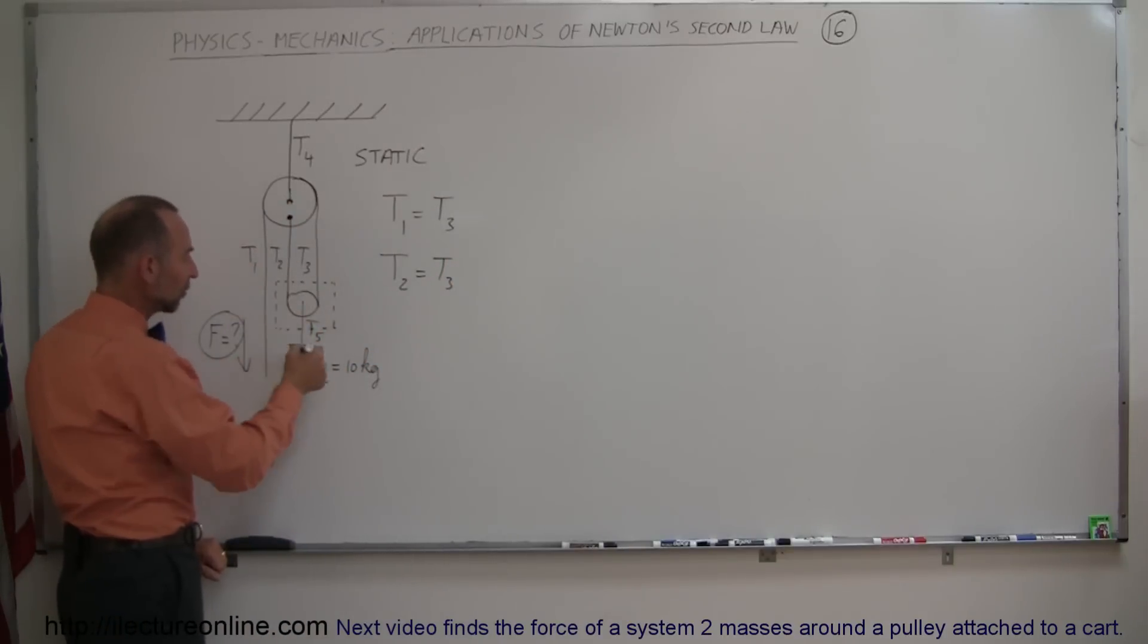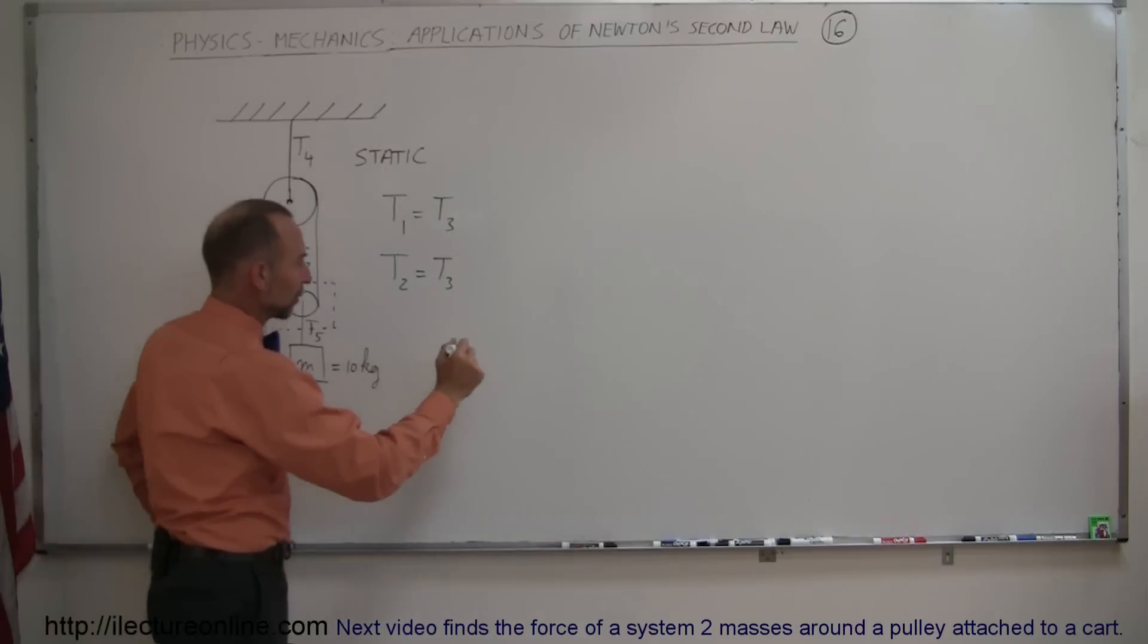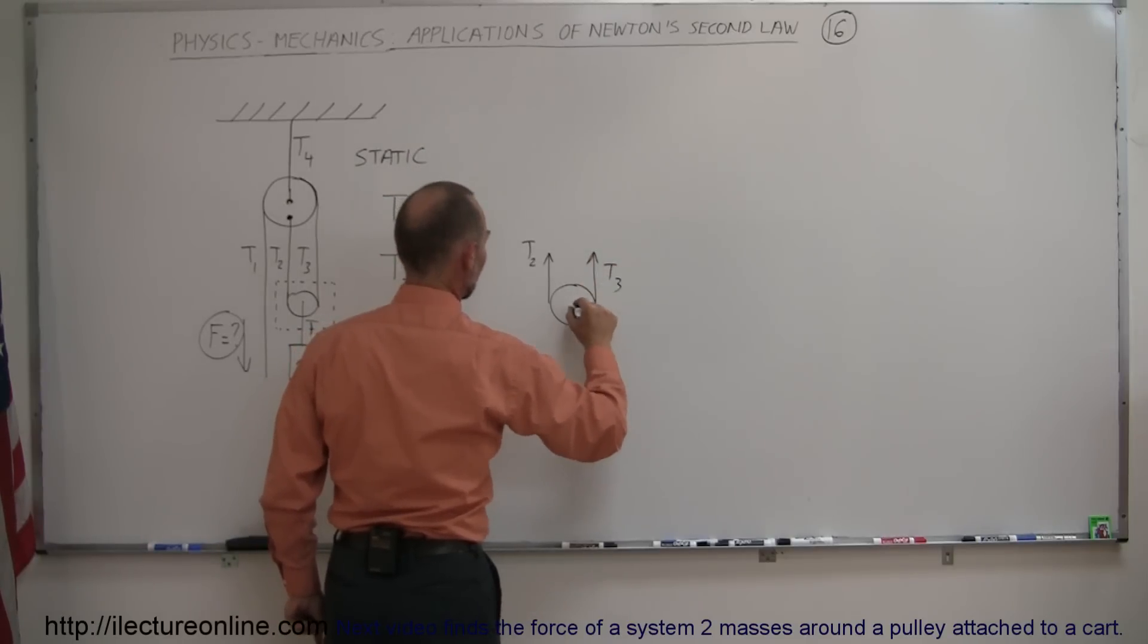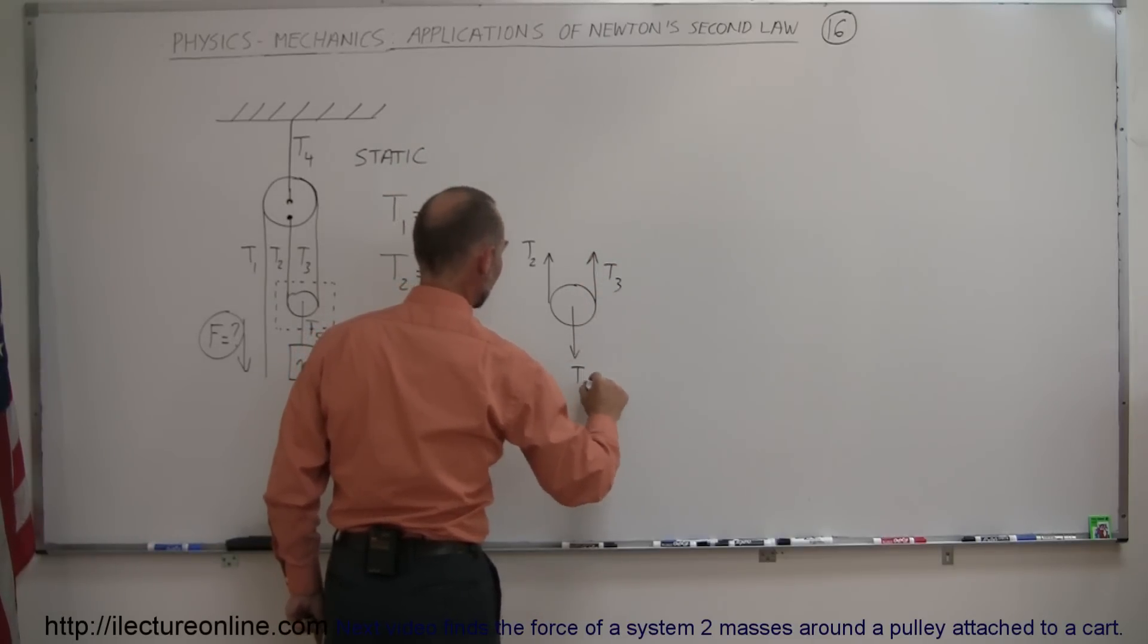And finally when we look at these three tensions, notice that if we draw a free body diagram, let me put it over here. So here's that bottom pulley. Here we have T2 in an upward direction, here we have T3 in an upward direction, and here we have T5 in a downward direction.